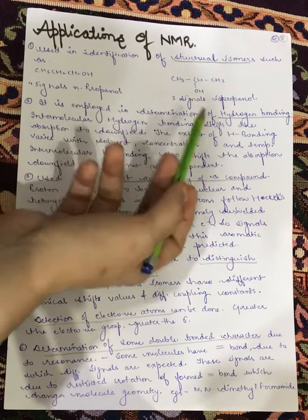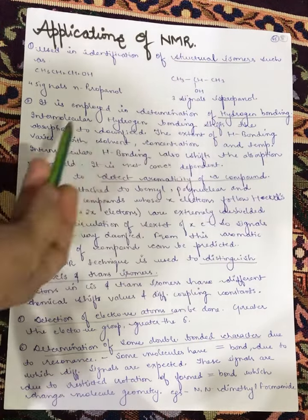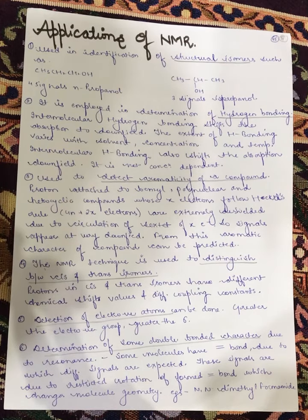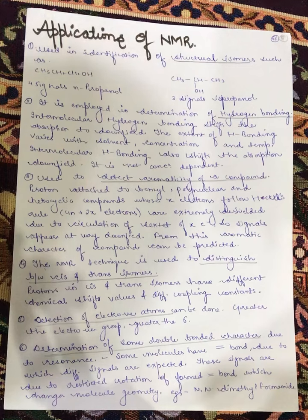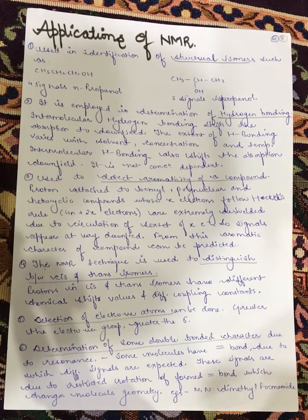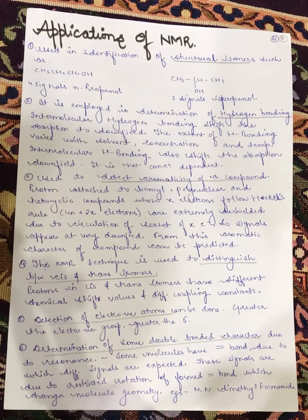NMR is employed in determination of hydrogen bonding. Intramolecular hydrogen bonding shifts the absorptions to downfield. The extent of hydrogen bonding varies with solvent concentration, temperature, and properties. Intermolecular hydrogen bonding also shifts the absorption downfield, and it is not concentration dependent.